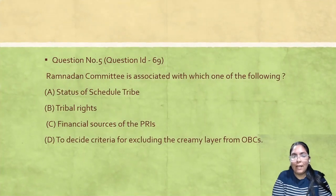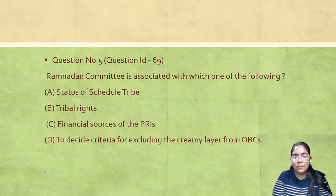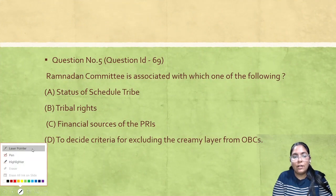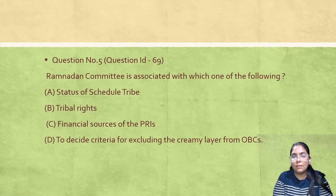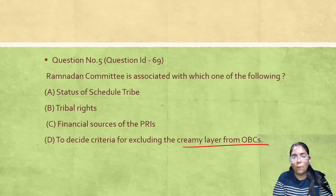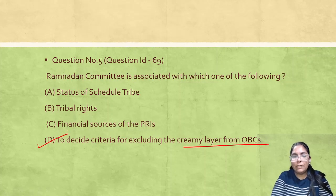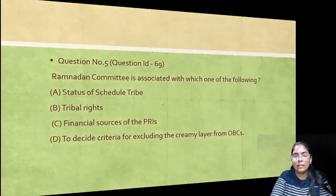Question number 5: Ram Nandan Committee — what is it related to? I am sure everyone already knows. The Ram Nandan Committee is connected with the creamy layer of OBC — this is option D. This has been widely discussed.